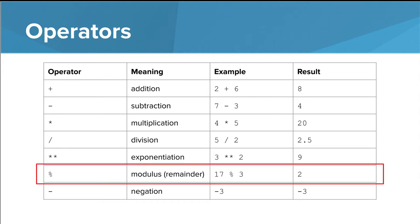The modulus operator finds the remainder when you divide one number by another. In the example, dividing 17 by three results in a remainder of two.